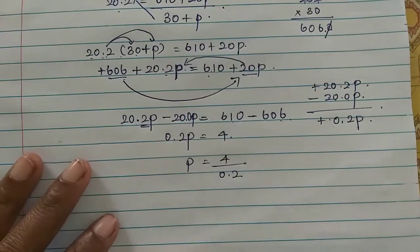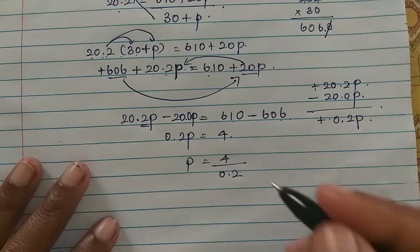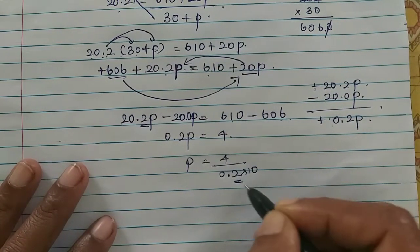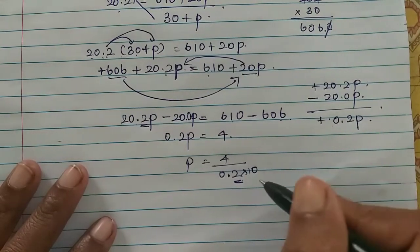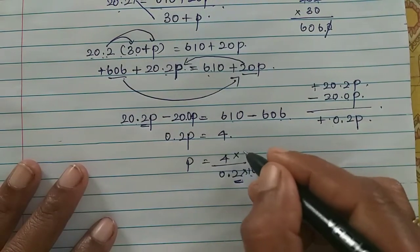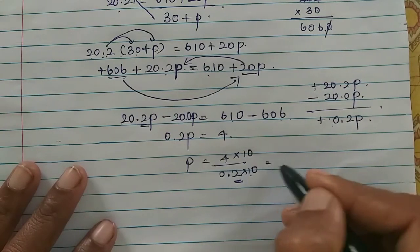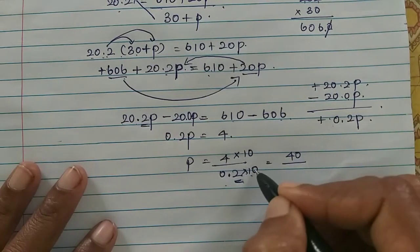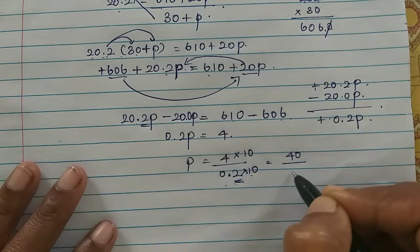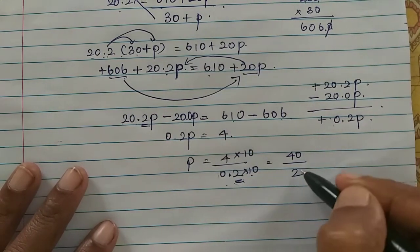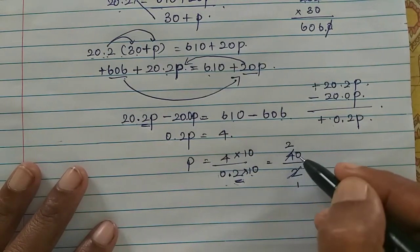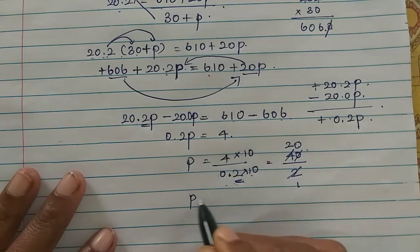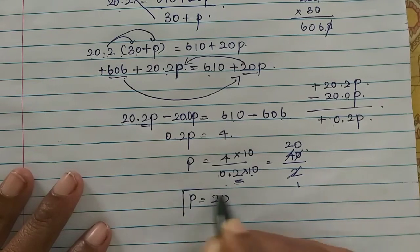To divide by a decimal, multiply both numerator and denominator by 10. So 4 into 10 is 40, and 0.2 into 10 is 2. 40 divided by 2 equals 20. The value of P is 20.